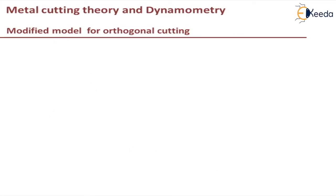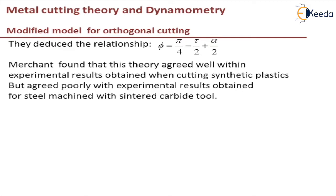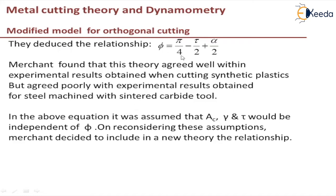In the previous video we discussed about Ernst and Merchant Theory. They derived a relationship: φ = π/4 − τ/2 + α/2. However, it is found that this equation agrees well with synthetic plastics but poorly agrees with steel machined with sintered carbide tools. This is the disadvantage of the Ernst and Merchant Theory, so they came up with a second theory.